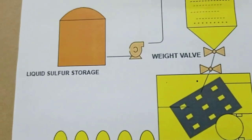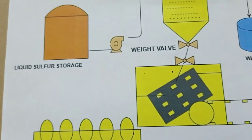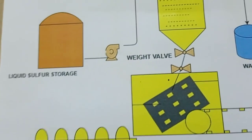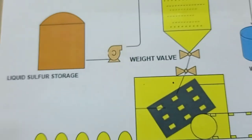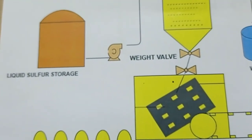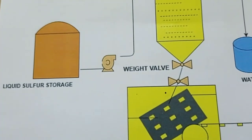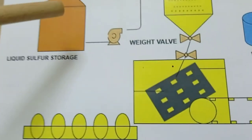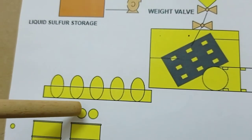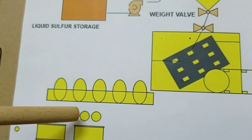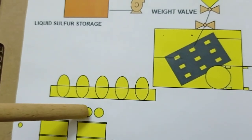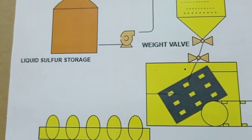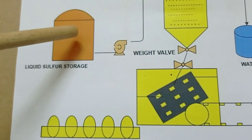As seen in the last video, we get sulfur from different condensers. After TGTU processing, the liquid sulfur collected is sent to the liquid storage tank — also called the surge tank. The color I've shown is exactly the color of liquid sulfur. When it turns into solid, the color changes to yellow. When sulfur is in liquid form its color appearance is darker amber.